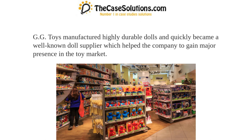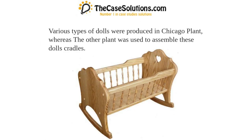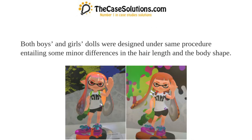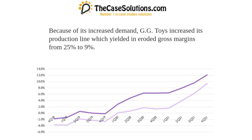GG Toys' reputation helped the company gain a major presence in the toy market. Various types of dolls were produced in the Chicago plant, whereas the other plant was used to assemble dolls and cradles. Both boys' and girls' dolls were designed under the same procedure, entailing minor differences in hair length and body shape.